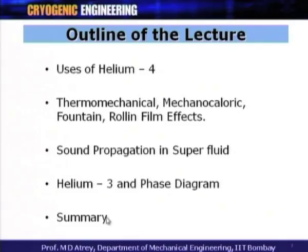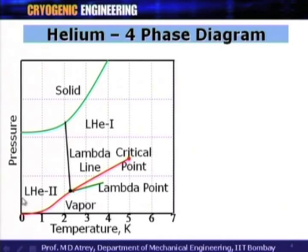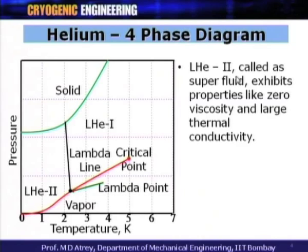We talked about the helium-4 phase diagram in detail last time. We found vapor, liquid and solid phases that do not meet at any point, meaning they do not have a triple point. There is the existence of a lambda point at 2.17 Kelvin, below which there is a second-order phase transition. Liquid helium-2 emerges with very high thermal conductivity and very low viscosity — it is called superfluid.